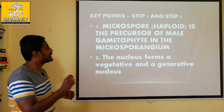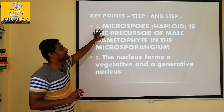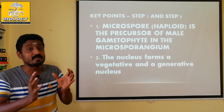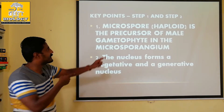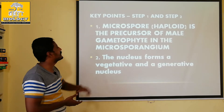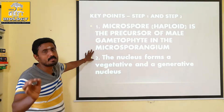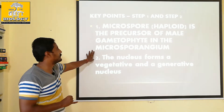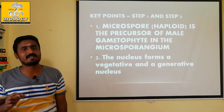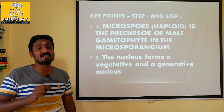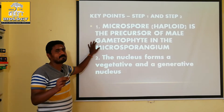Step 1: The microspore is the precursor for the male gametophyte in the microsporangium. The mother cell will produce microspores. Microspores will develop into pollen grains. This microspore is a haploid cell and it will develop into pollen grains. The microspore is the starting point — it is the precursor. Microspore is the male gametophyte.